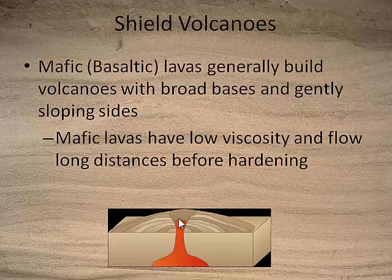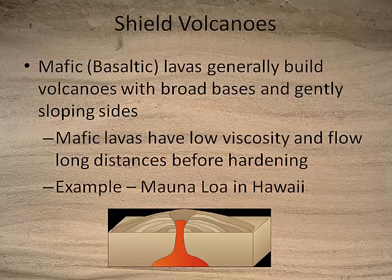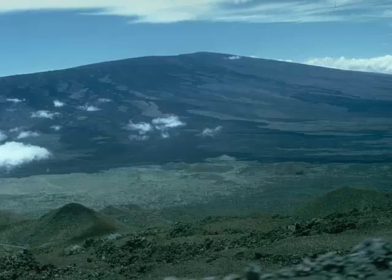You can see in this picture that when the lava comes out, it can run a long way before it hardens, giving you this kind of low, broad volcano. An example of that would be Mauna Loa in Hawaii. It's so big you can't get the whole thing in a picture — it extends way out in both directions because the lava from the vent is so thin and runny it travels a very long distance before hardening.